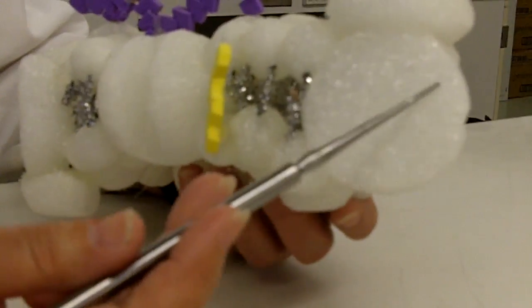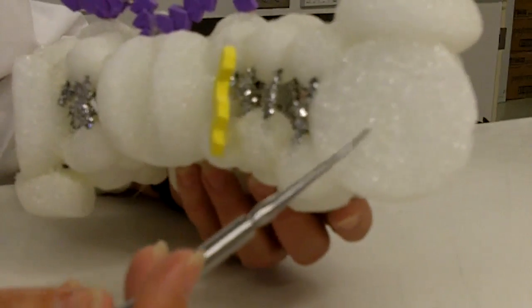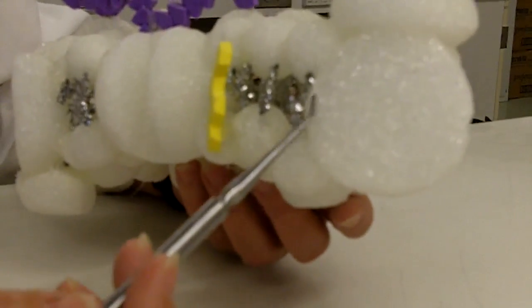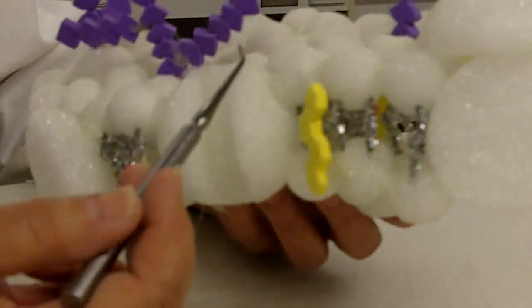More embedded in the membrane would be the integral proteins. The integral proteins might serve as a carrier or a channel. Those are two of its functions. This one has a channel or a pore.